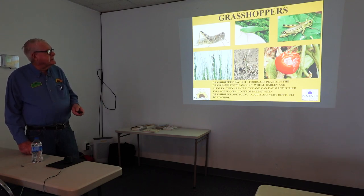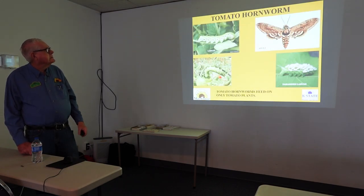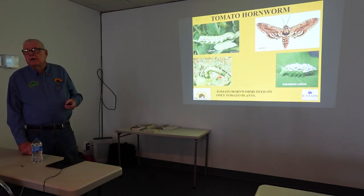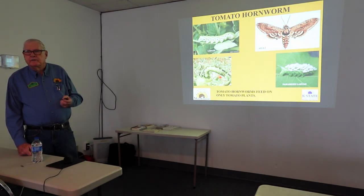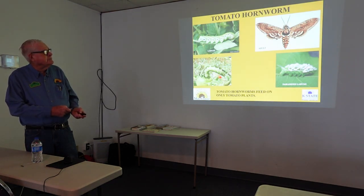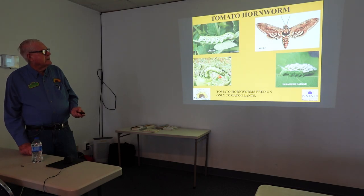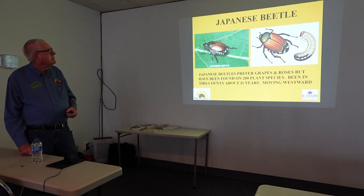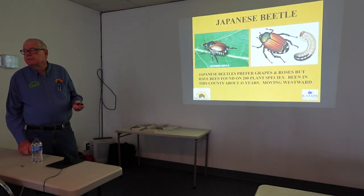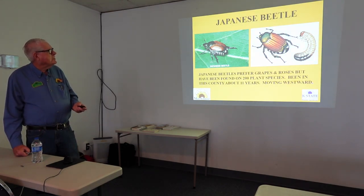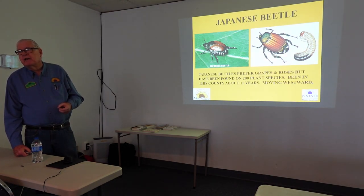The adults, as I said, are extremely difficult to control. Tomato hornworm — they are mostly on the tomato plant, so that's where we commonly see them. Here's a hornworm that's been parasitized by a wasp. Japanese beetles — lovely creatures. They prefer grapes and roses, but they've been found in over 200 different plant species. They've been in this county about 11 years and have been continually moving westward.